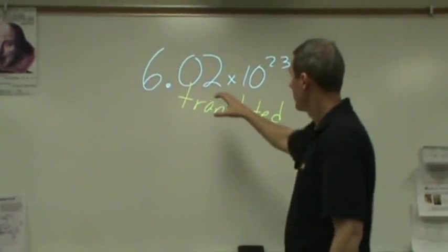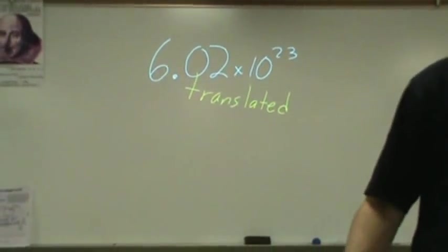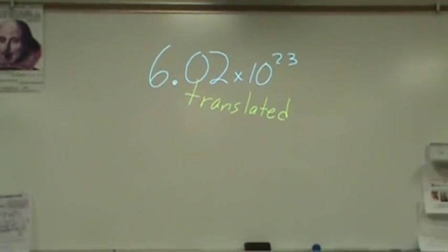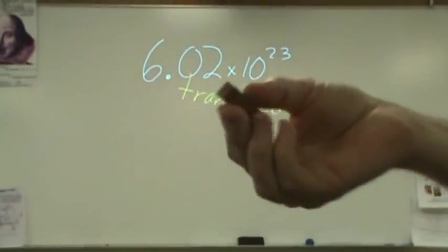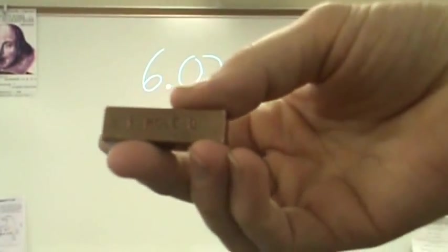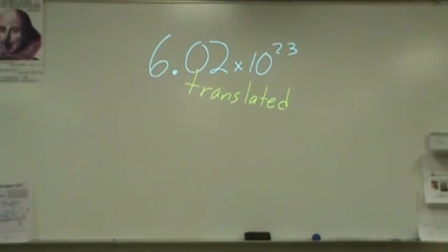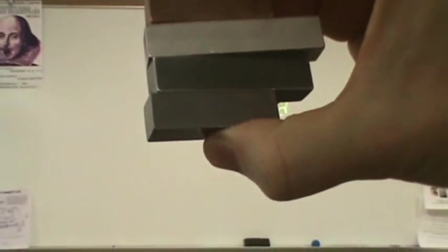In chemistry, the number 6.02 times 10 to the 23rd is a very big deal, something you'll remember probably for the rest of your life, whether you like chemistry or not. Here I have four different bars that all have that number of atoms in them. They're all different in size, they're all different in mass, but every single one of those bars has the same number of atoms.